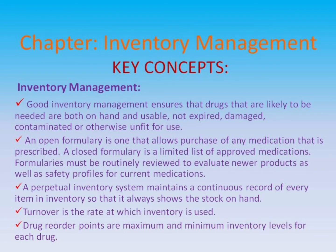Key concepts. Inventory management: good inventory management ensures that drugs likely to be needed are both on hand and usable — not expired, damaged, contaminated, or otherwise unfit for use. An open formulary allows purchase of any prescribed medication. A closed formulary is a limited list of approved medications. Formularies must be routinely reviewed to evaluate newer products as well as safety profiles for current medications. A perpetual inventory system maintains a continuous record of every item in inventory, so that it always shows the stock on hand. Turnover is the rate at which inventory is used. Drug reorder points are maximum and minimum inventory levels for each drug.